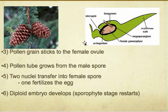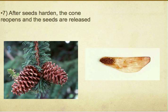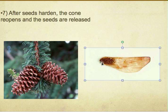The diploid embryo develops, which basically means the stage restarts again if the plant wants to create another plant. The last step is that after the seed hardens, the cone reopens and the seeds are released. After this process, the seed is released and grows inside the plant again. This is basically how it looks.